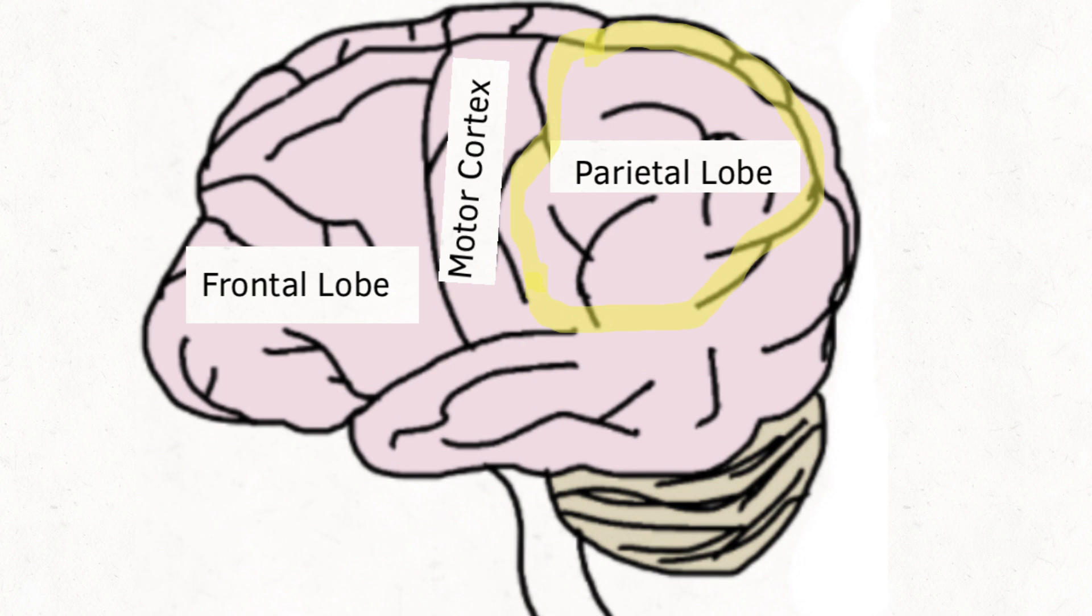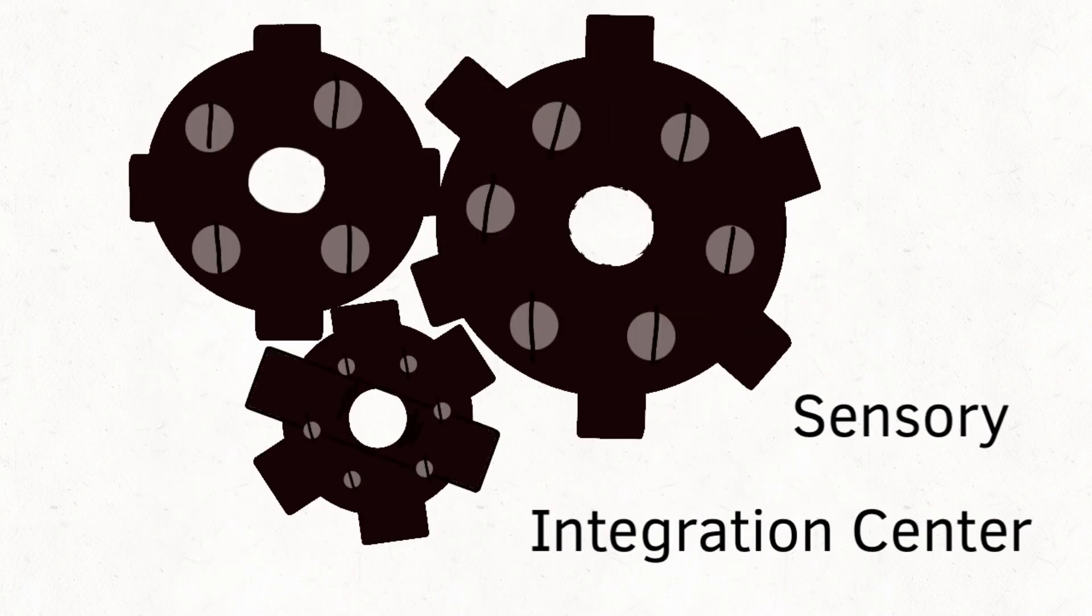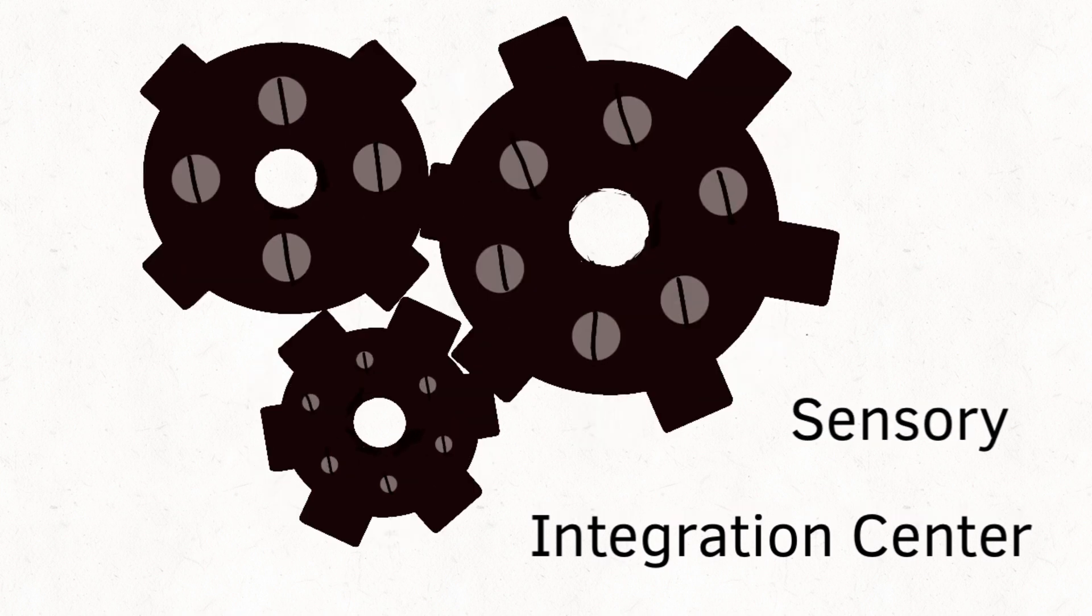The parietal lobe is our sensory integration center. It helps process things such as sense of touch and pain.